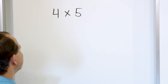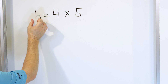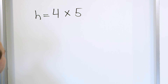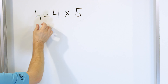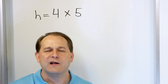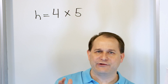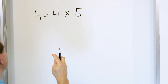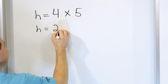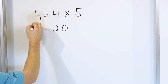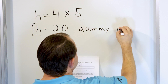We could call it G for gummy worms if you want, but let's just use H. Whatever the answer to four times five is, it's going to be put inside the label H. You can think of H being like a box that holds an answer. So we say: H is equal to four times five. From our multiplication tables, four times five is 20. So H is equal to 20 gummy worms.